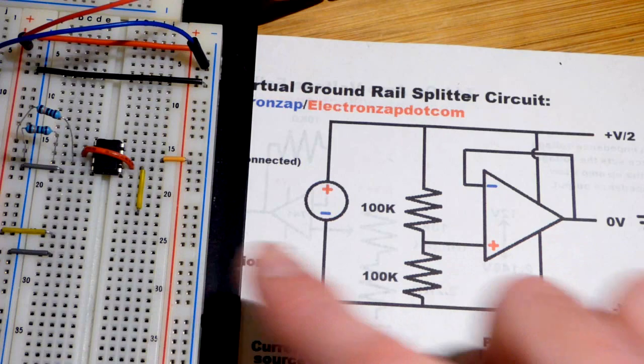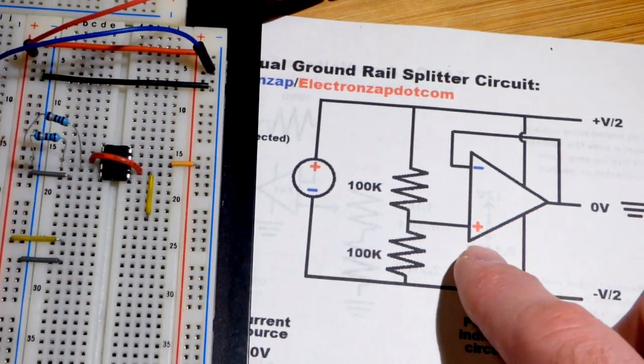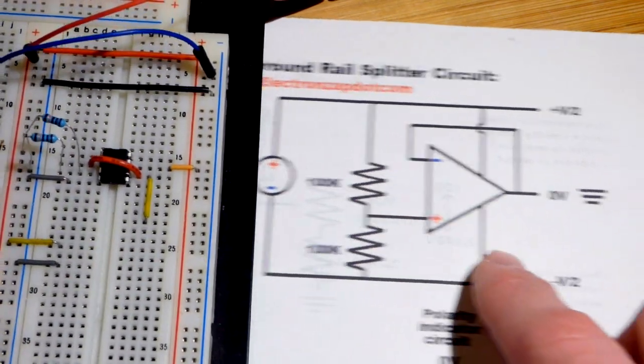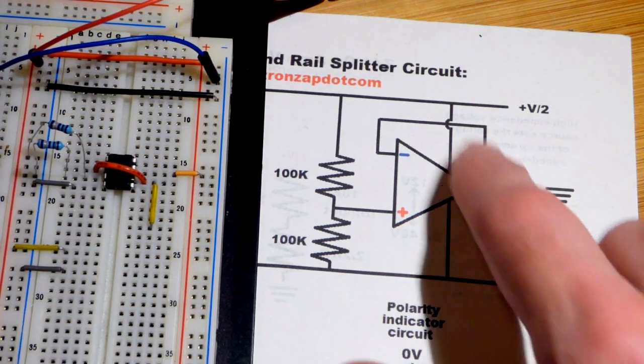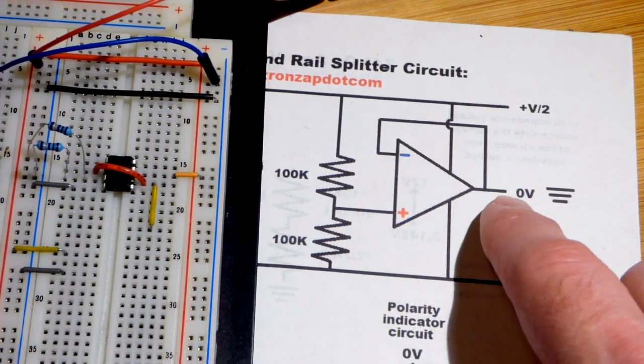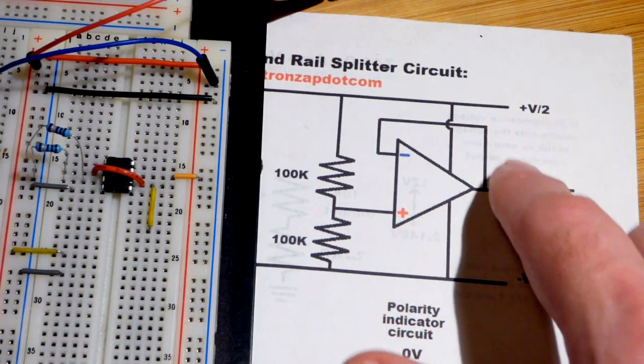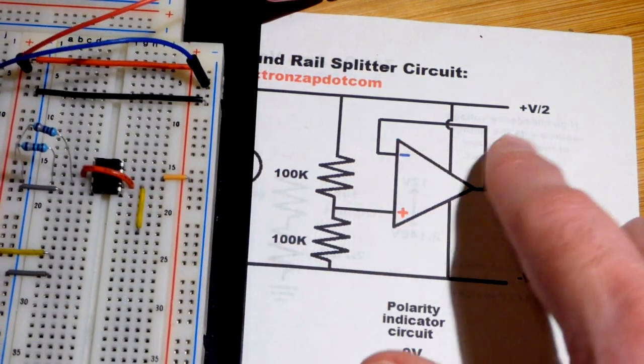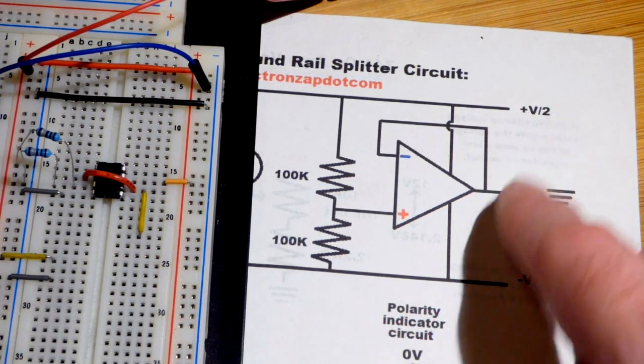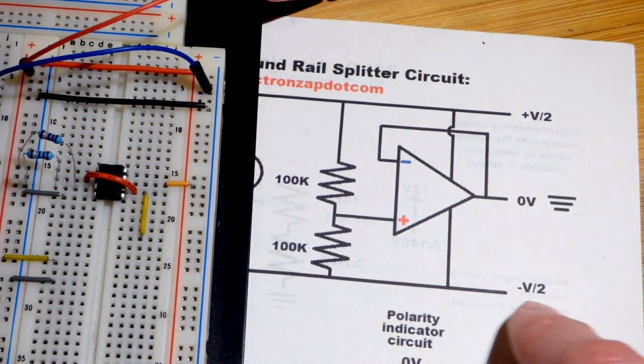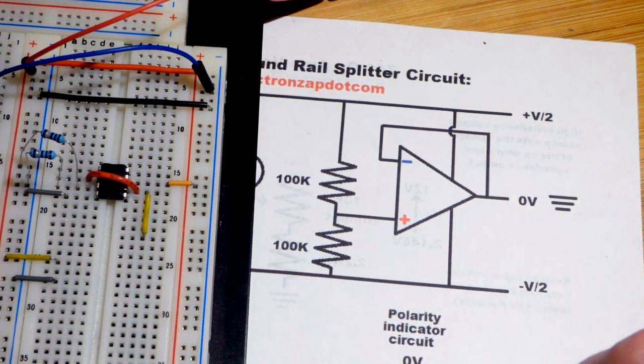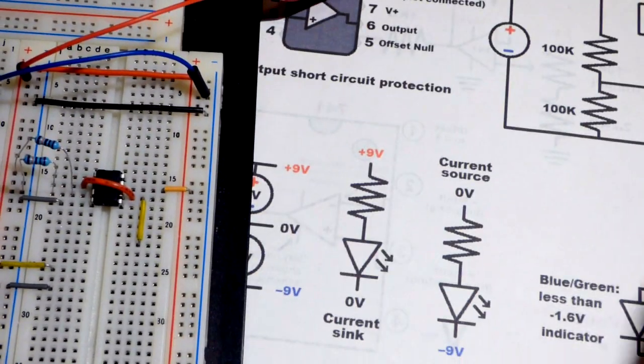The positive rail will be half, so 18 volts will have 9 volts at the positive rail and then negative 9 volts at the negative rail. I did multimeter measurements in the video where we built it.